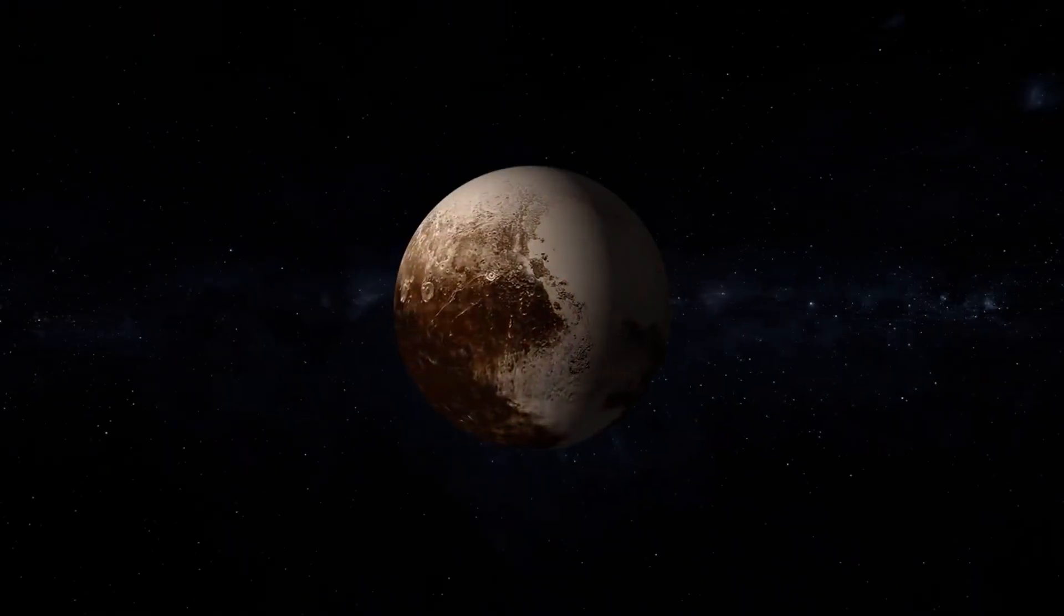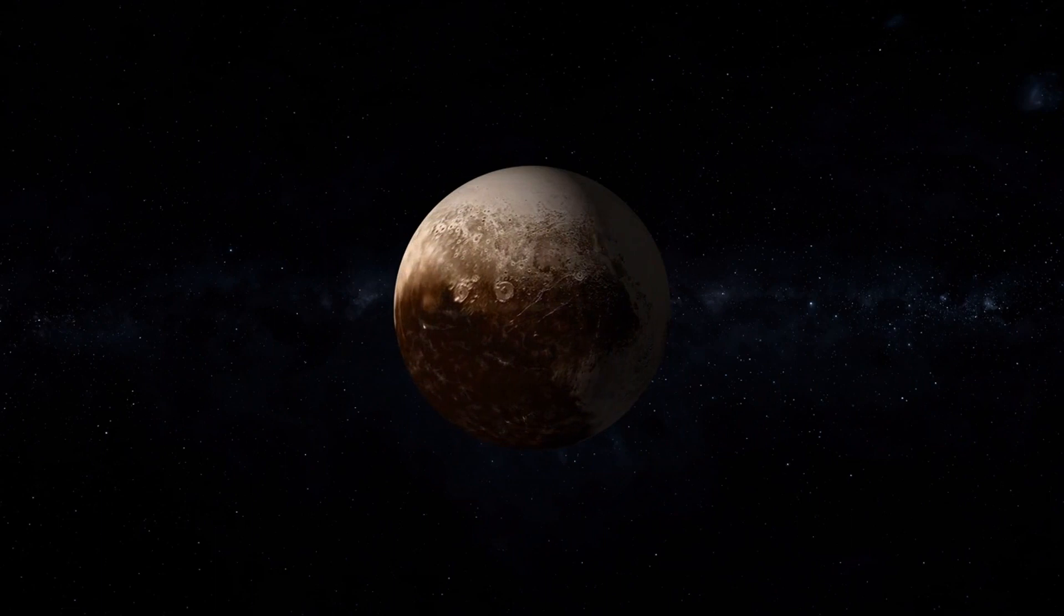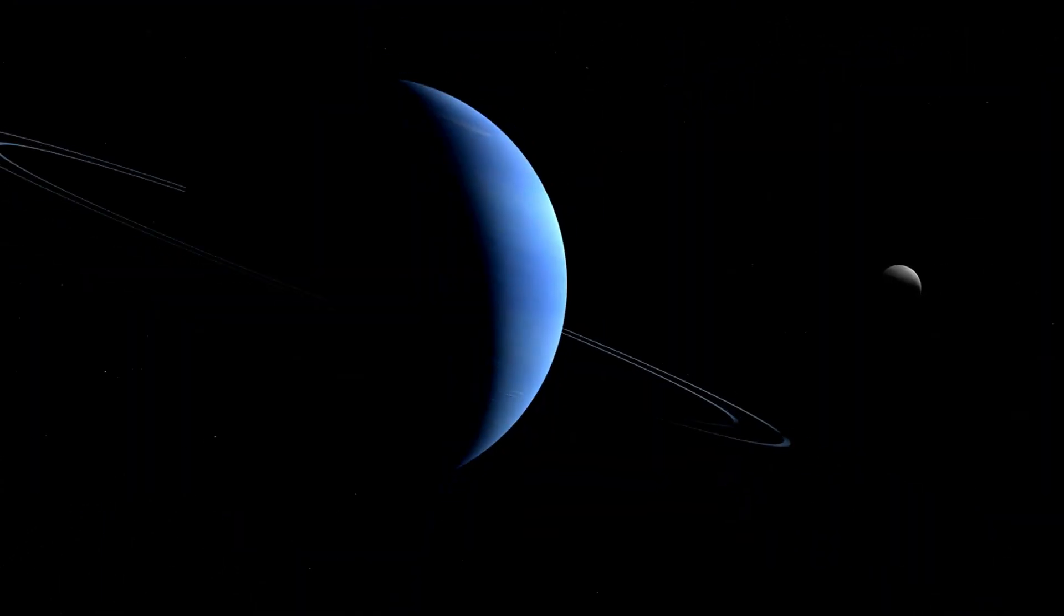As a result, the IAU reclassified Pluto as a dwarf planet. This category includes other similar-sized objects in the Kuiper Belt, such as Eris, Haumea, and Makemake, which also don't clear their orbits.